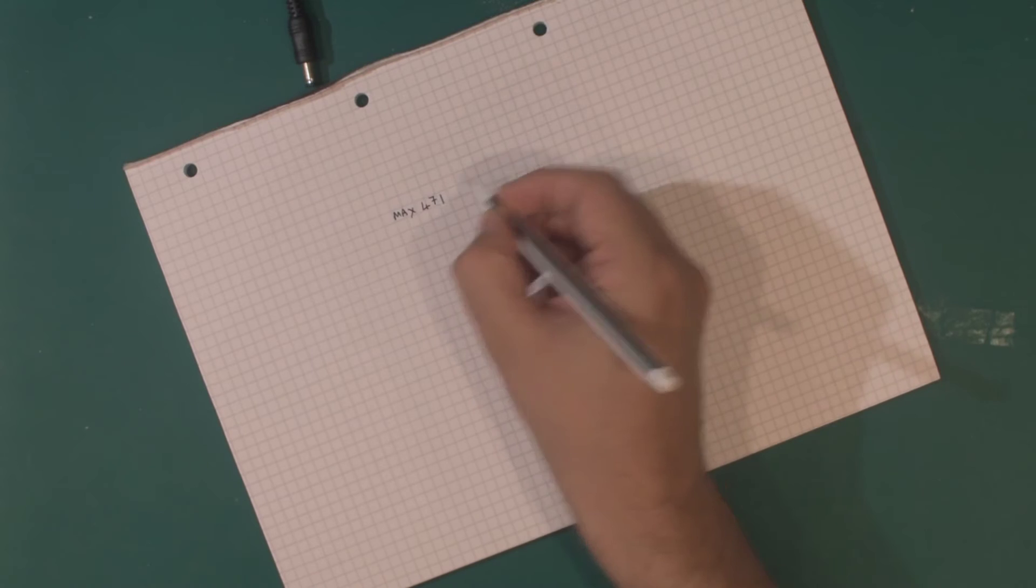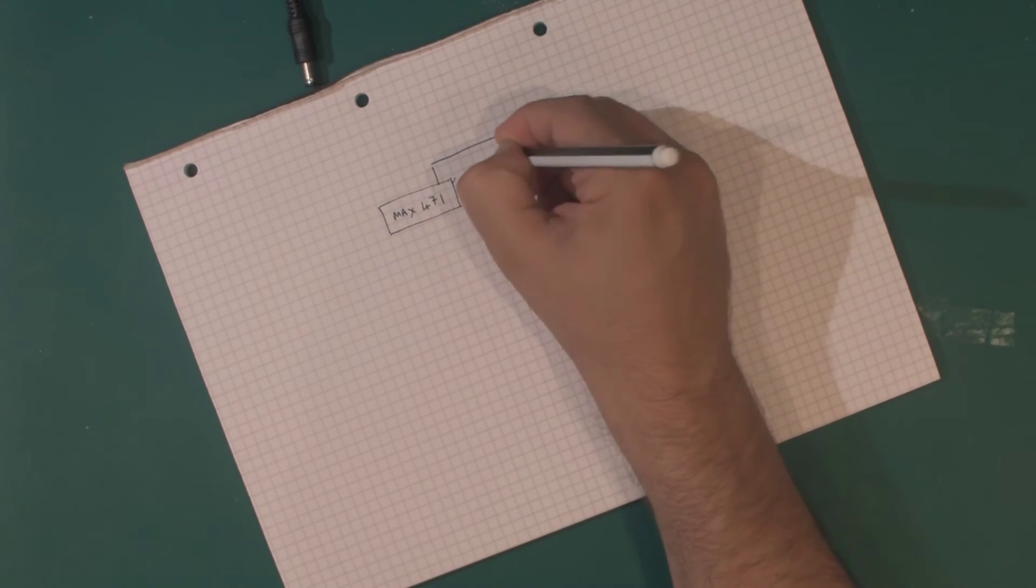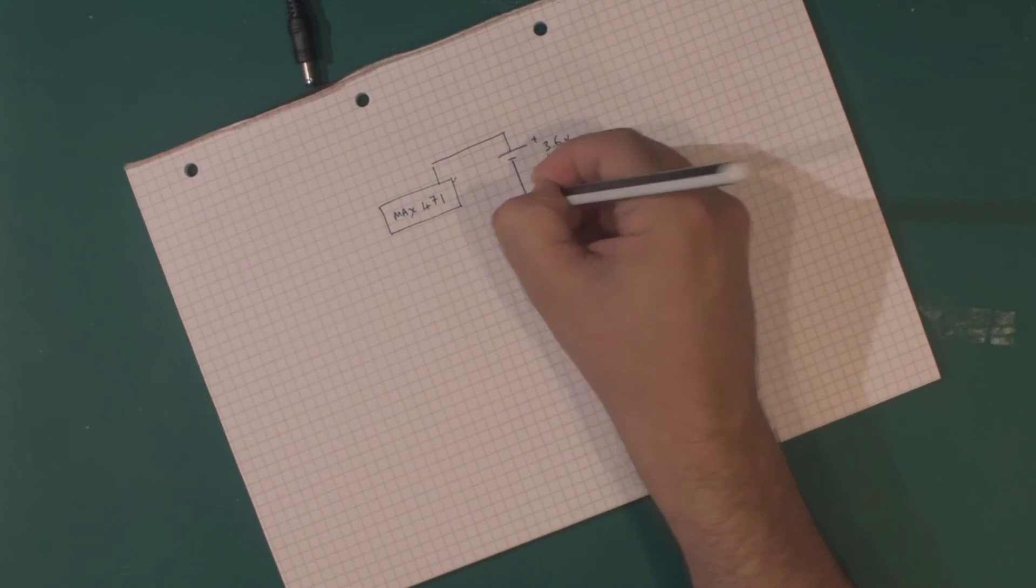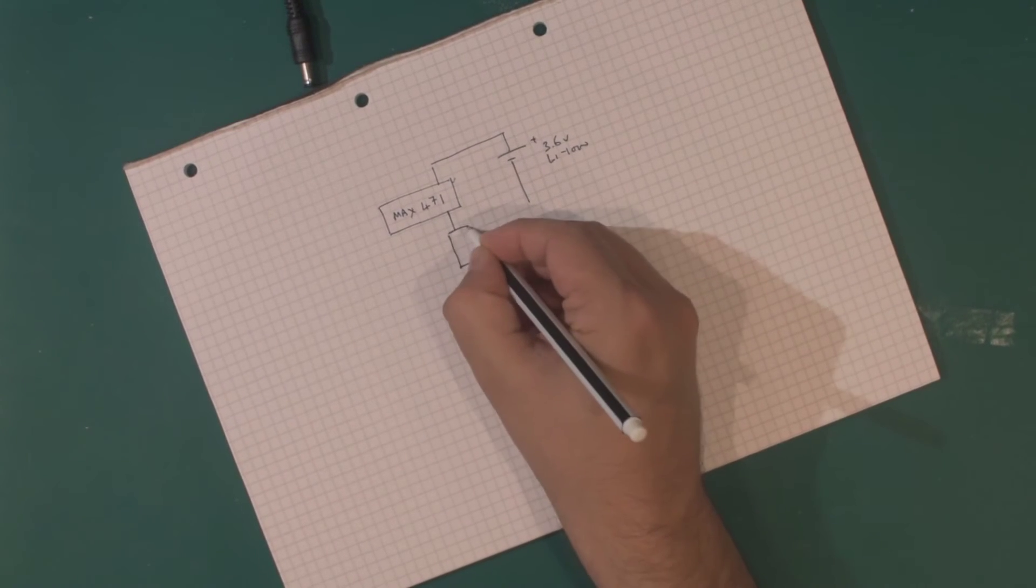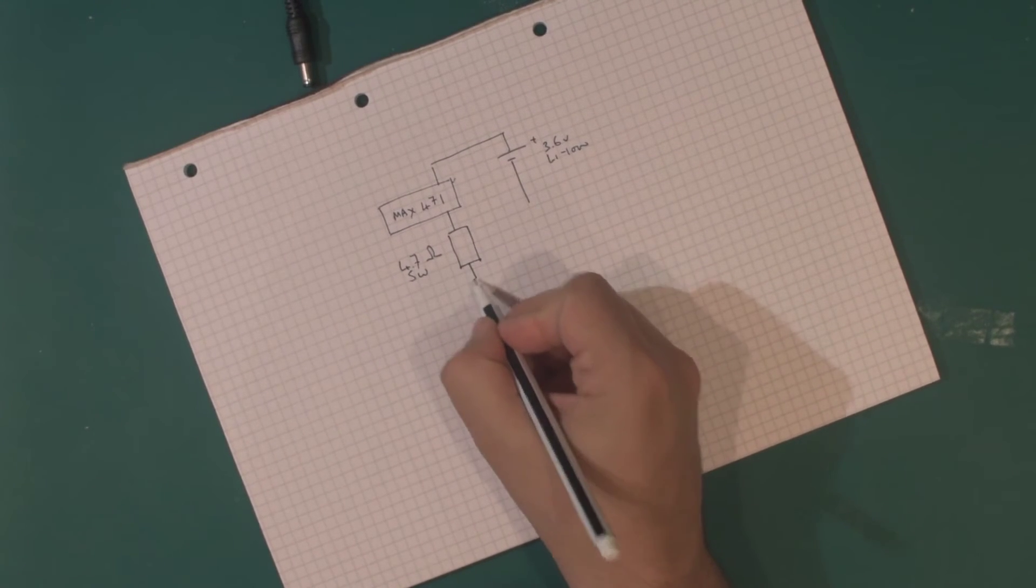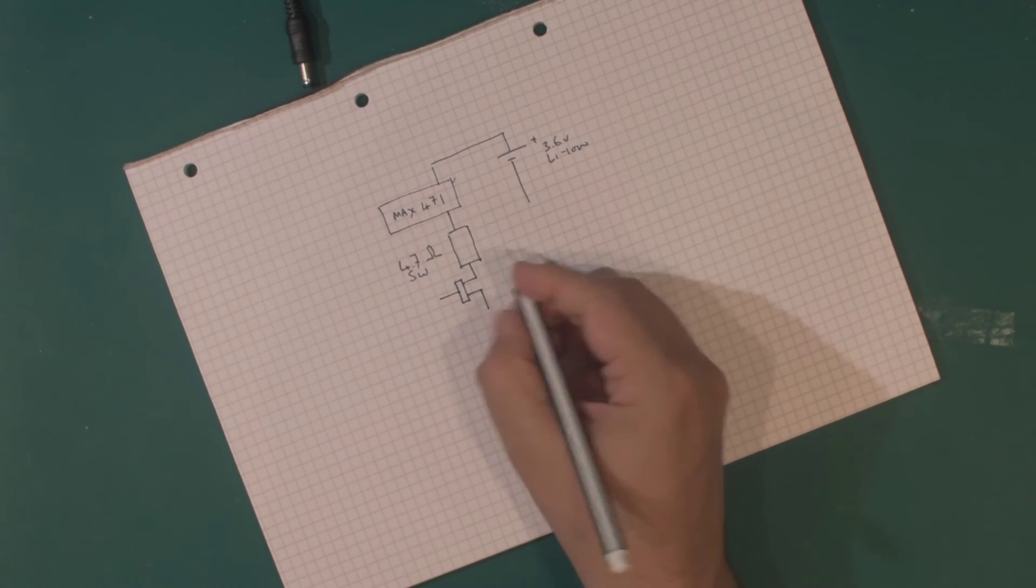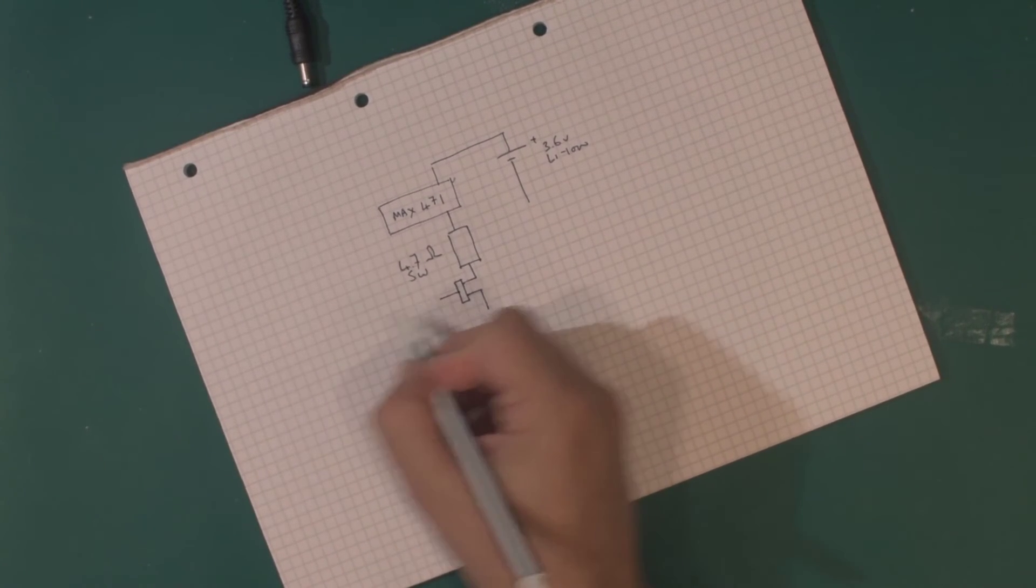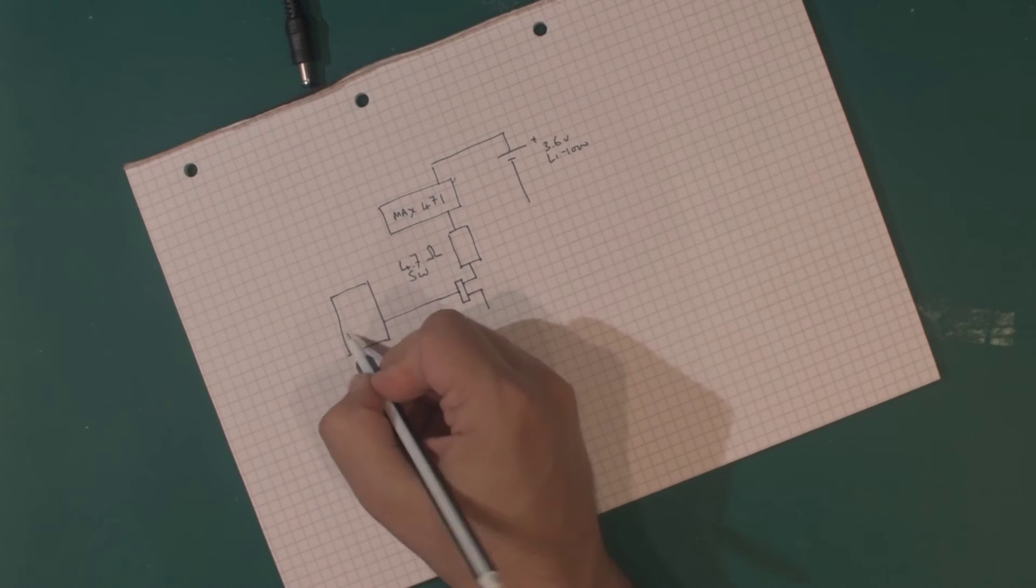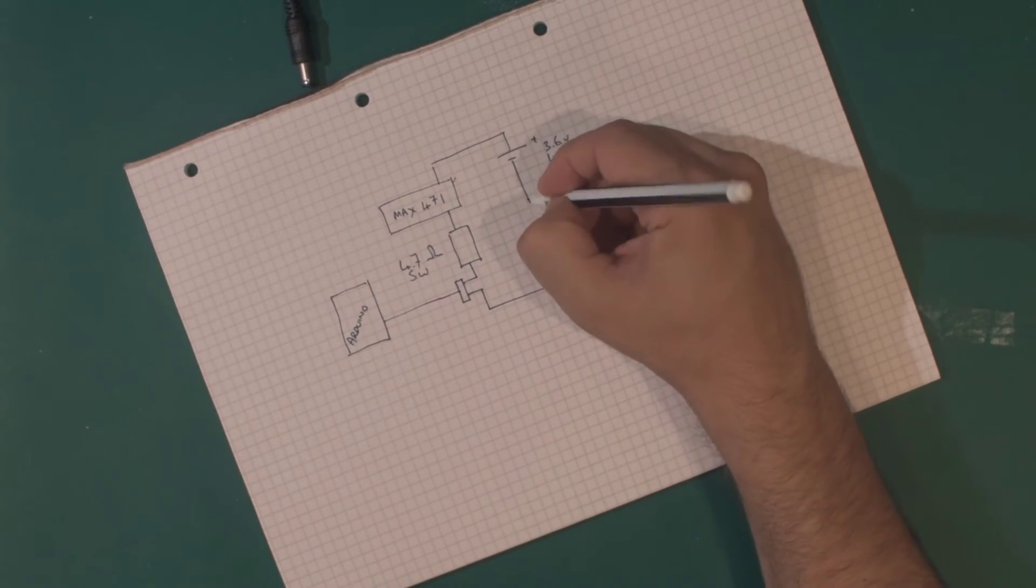So what we have is we have a MAX4471 current sensing chip which we put the battery through, which is our 3.6 volt lithium ion cell. After that we've got our huge 4.7 ohm 5 watt resistor, followed by our FET which is connected to our Arduino.